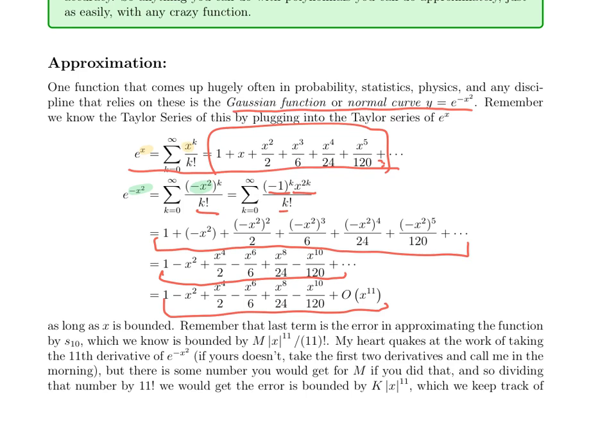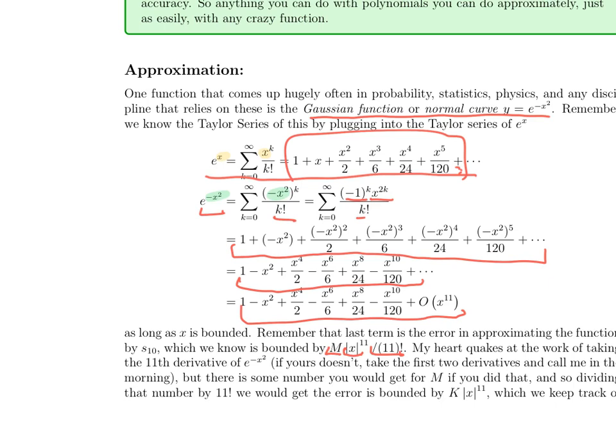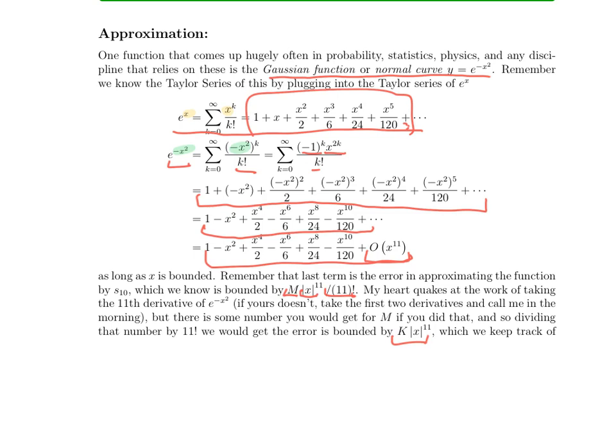To figure out what m is, is really hard. Like, we could figure it out for e to the x, but to figure it out for e to the minus x squared, we'd need to take the first 11 derivatives of e to the minus x squared. That is miserable. And then bound that on whatever interval you're looking at. But whatever you get, as long as x is bounded, as long as you're interested in a finite interval, there's some bound m. When you divide it by 11 factorial, you get some number k absolute value of x to the 11th, which bounds the error. And the way you say that is, an error that is bounded by the absolute values, a multiple of the absolute value of x to a power, you write as O of x to the 11th.